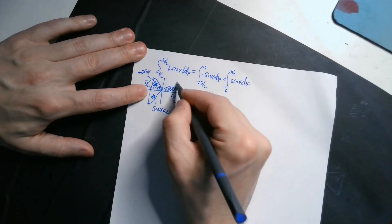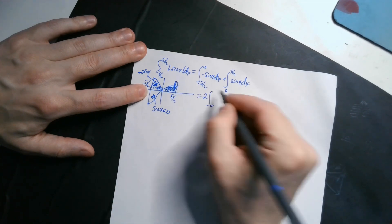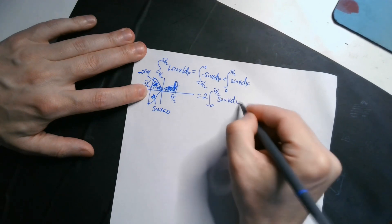These pieces, despite the badness of my picture, let's say, these pieces are symmetric if you do them carefully. So you find you have 2 times the integral from 0 to pi over 2 of sine x dx.